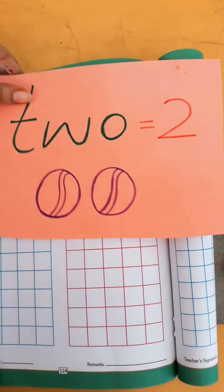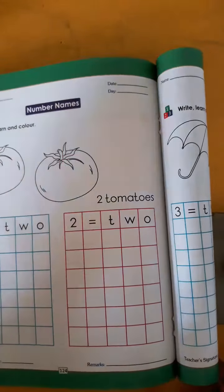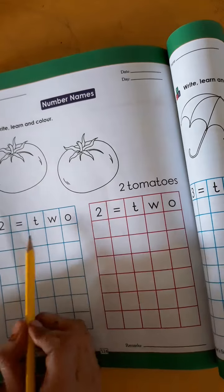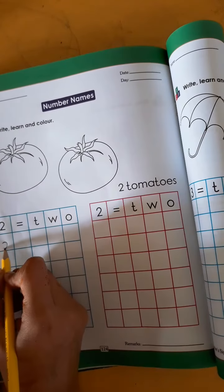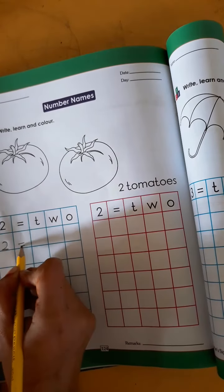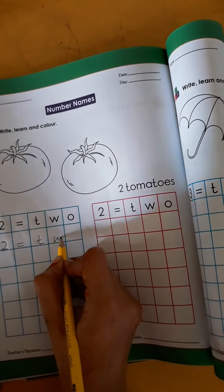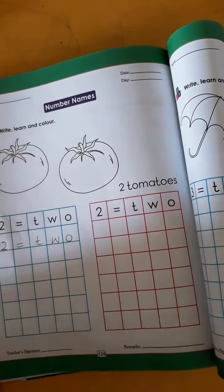Now, come to book page number 124. Now, we will write the spelling of number 2. T-W-O, 2.